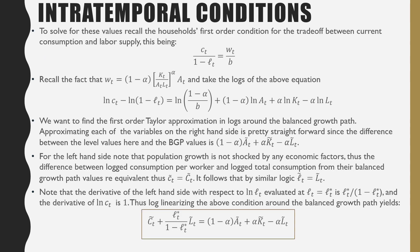Let's talk about the intratemporal conditions. To solve for these values, recall the household's first order condition for the trade-off between current consumption and labor supply. This being Ct over 1 minus L, which is the labor supply per household, is equal to Wt over B.